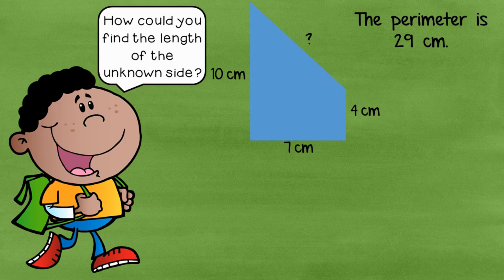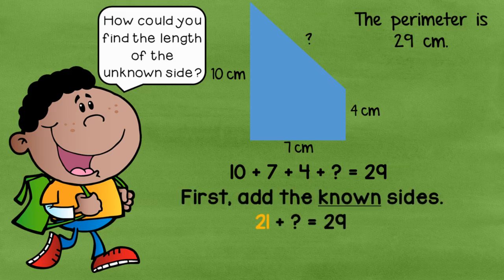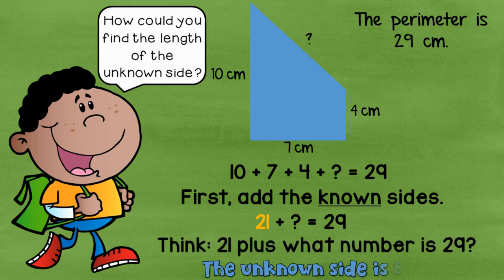Now what if you knew the perimeter, but one side was left off? Could we figure that out? Sure we could. The first thing we're going to do is we're going to add up all the sides that we know. So we're going to think ten plus seven plus four. And once we add those known sides, we're going to get the answer of twenty-one. Because ten plus seven is seventeen. Plus four is twenty-one. So twenty-one plus what equals twenty-nine? You could count up, you could use back power, or you could even subtract twenty-nine minus twenty-one. And no matter how you got it, you should get the answer of eight. So the unknown side is eight centimeters.